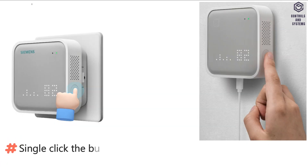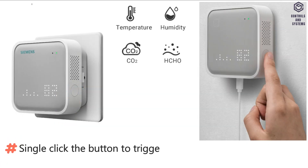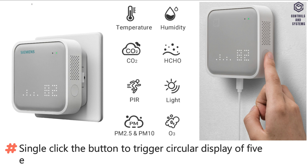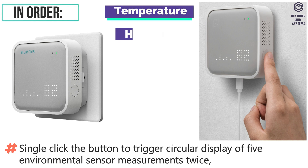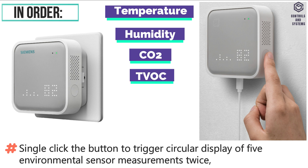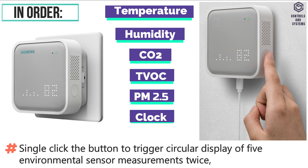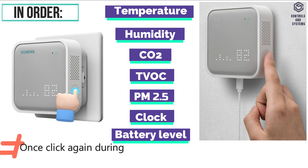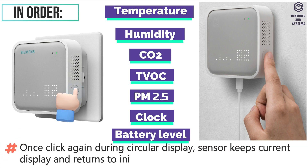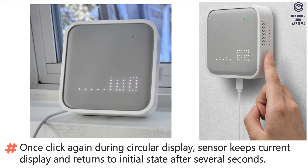Single-click the button to trigger a circular display of 5 environmental sensor measurements twice, in order: temperature, humidity, CO2, TVOC, PM2.5, clock, and battery level. Once you click again during the circular display, the sensor keeps the current display and returns to the initial state after several seconds.